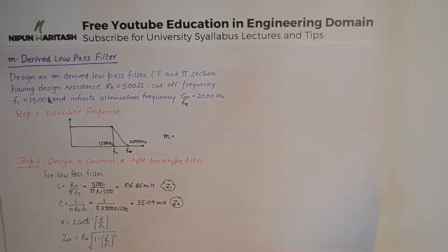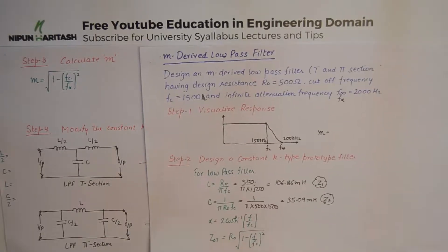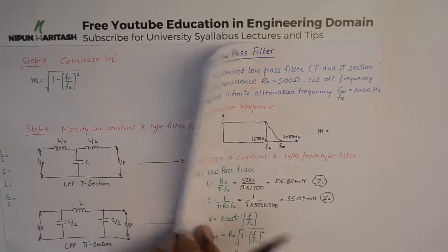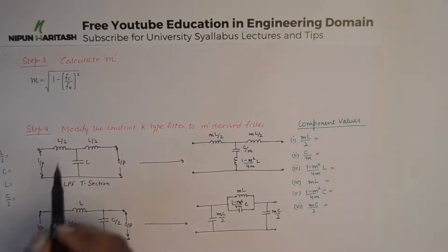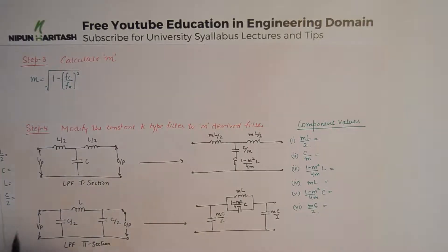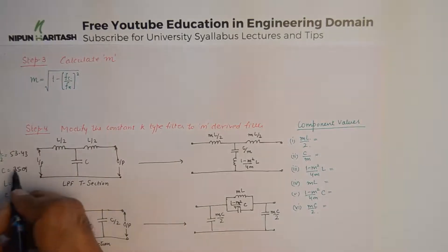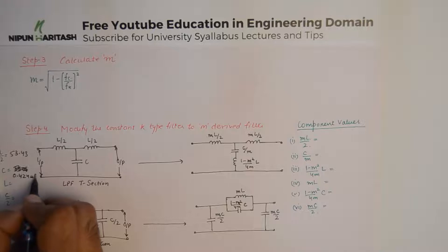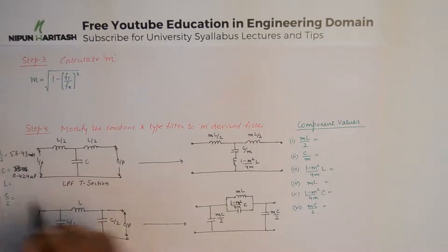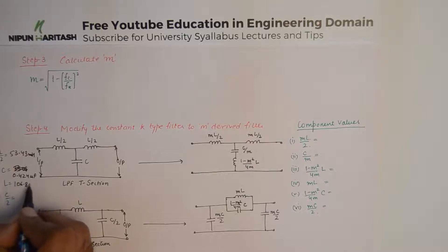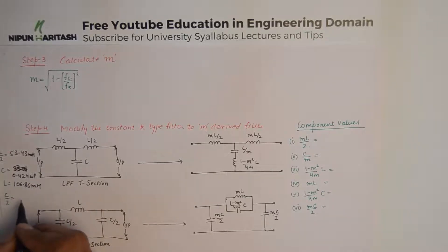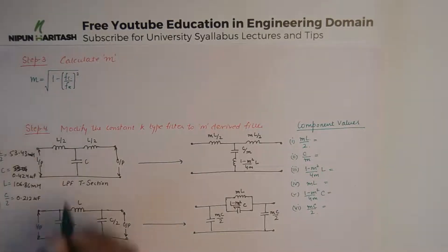We simply need the values of L and C for the coming steps. From these values, L/2 becomes 53.43 millihenry. The value of C is 0.424 microfarad, L is 106.86 millihenry, and C/2 comes out to be 0.212 microfarad. The reason we calculate all these component values is that we will substitute them into the filter design.